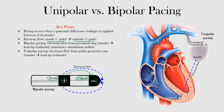This is an example of bipolar pacing. With bipolar pacing, electrons are flowing from the proximal ring — this portion here — over to the lead tip. This lead tip is then interfacing on the endocardium. So you have electrons flowing from the anode to the cathode in this direction.